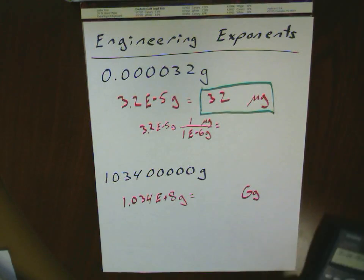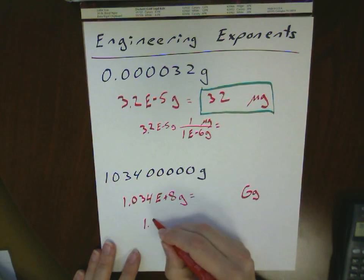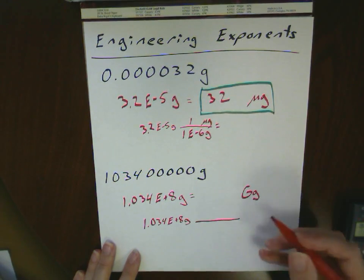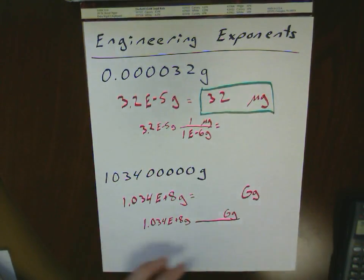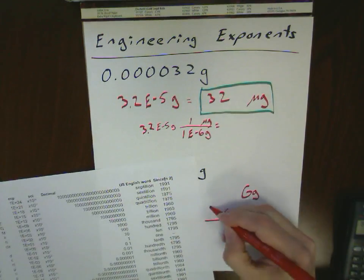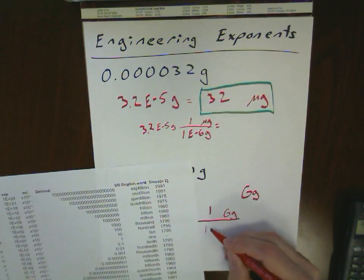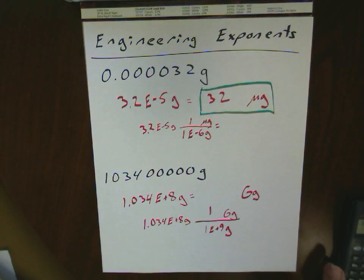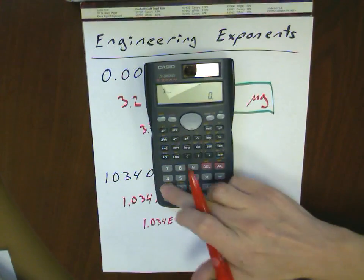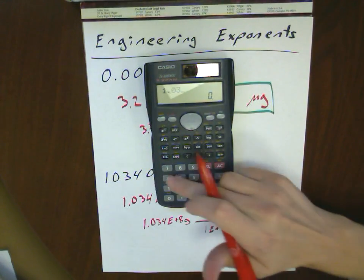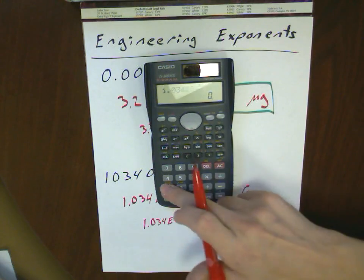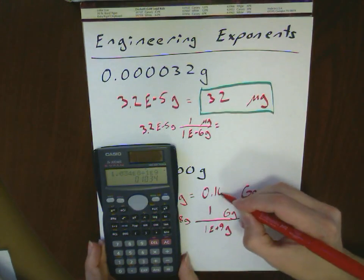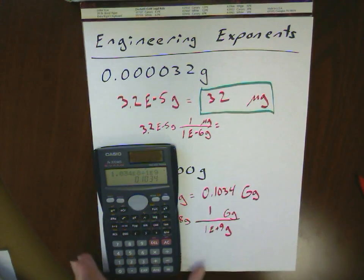Similarly, I can do this with my large number here. I've got 1.034e to the plus 8 grams, and I'm trying to get that into gigagrams. And one gigagram would be 1e to the plus 9 grams. Putting that into my calculator, I would have 1.034e to the 8th divided by 1e to the 9th. And that tells me I've got 0.1034 gigagrams.